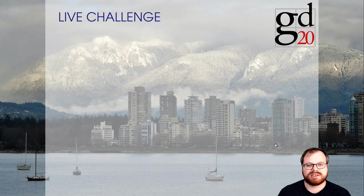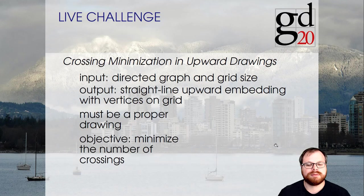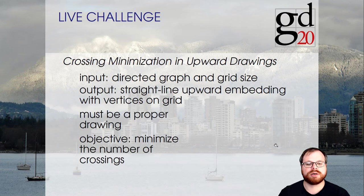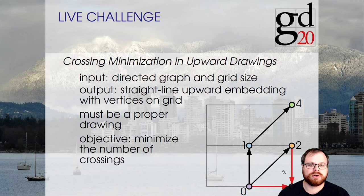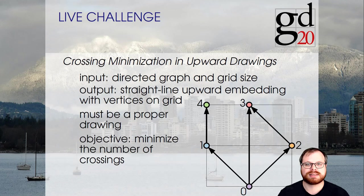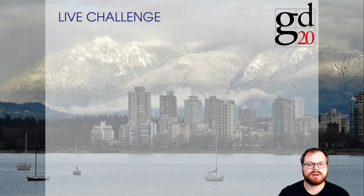Let's go to the live challenge. The topic this year was crossing minimization and upward drawings. As input you received a directed graph and the size of a grid, and the output was a straight-line upward embedding where vertices had to lie on the grid. The drawing must be proper with no overlaps, and the objective was to minimize the number of crossings. In total we had 13 graphs: 6 for the manual category and 7 additional larger graphs for the automatic category.